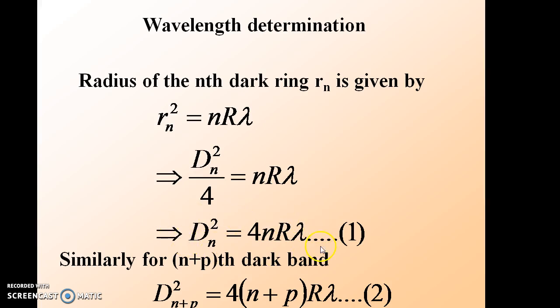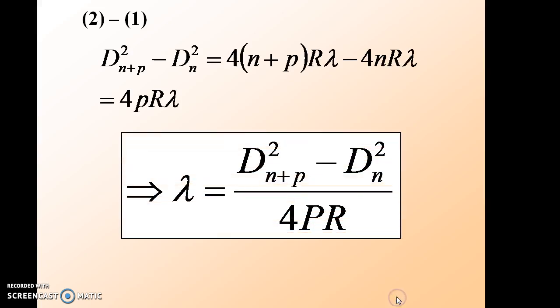Similarly, the diameter of any (n+p)th dark ring is given by d_(n+p) squared equals 4·(n+p)·r·λ — call this equation 2. Subtracting equation 1 from equation 2 gives d_(n+p) squared minus d_n squared equals 4·(n+p)·r·λ minus 4·n·r·λ, which equals 4·p·r·λ. Rearranging, the wavelength is λ equals d_(n+p) squared minus d_n squared, all divided by 4·p·r.